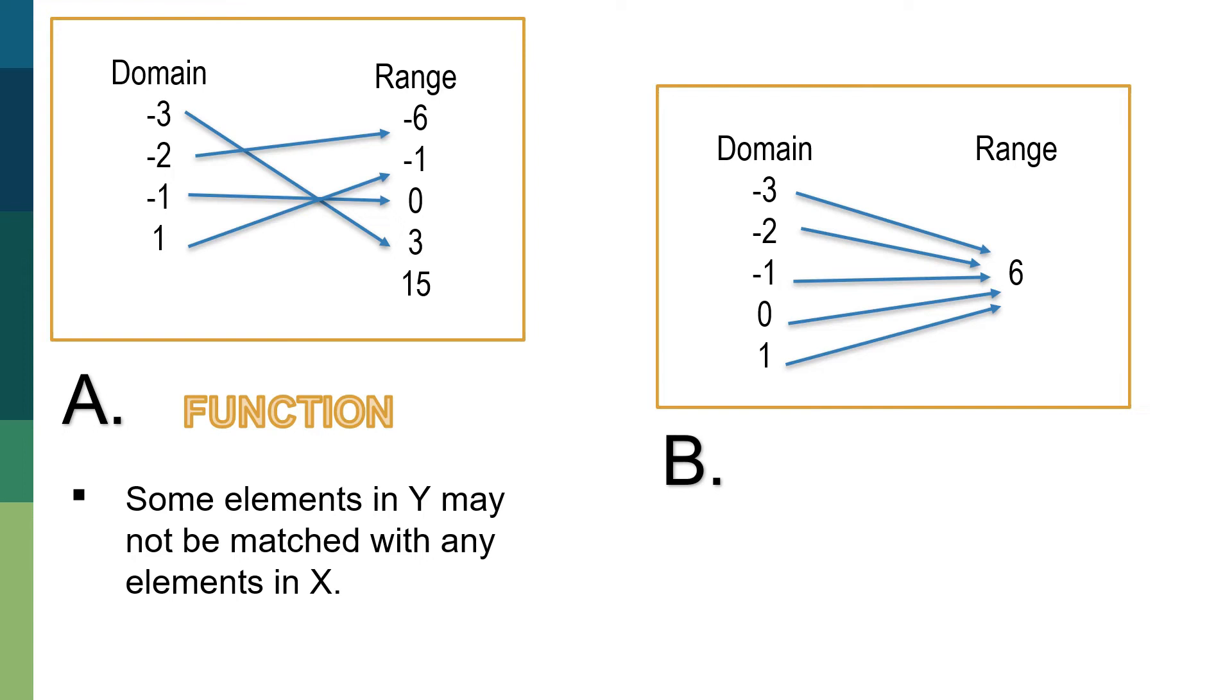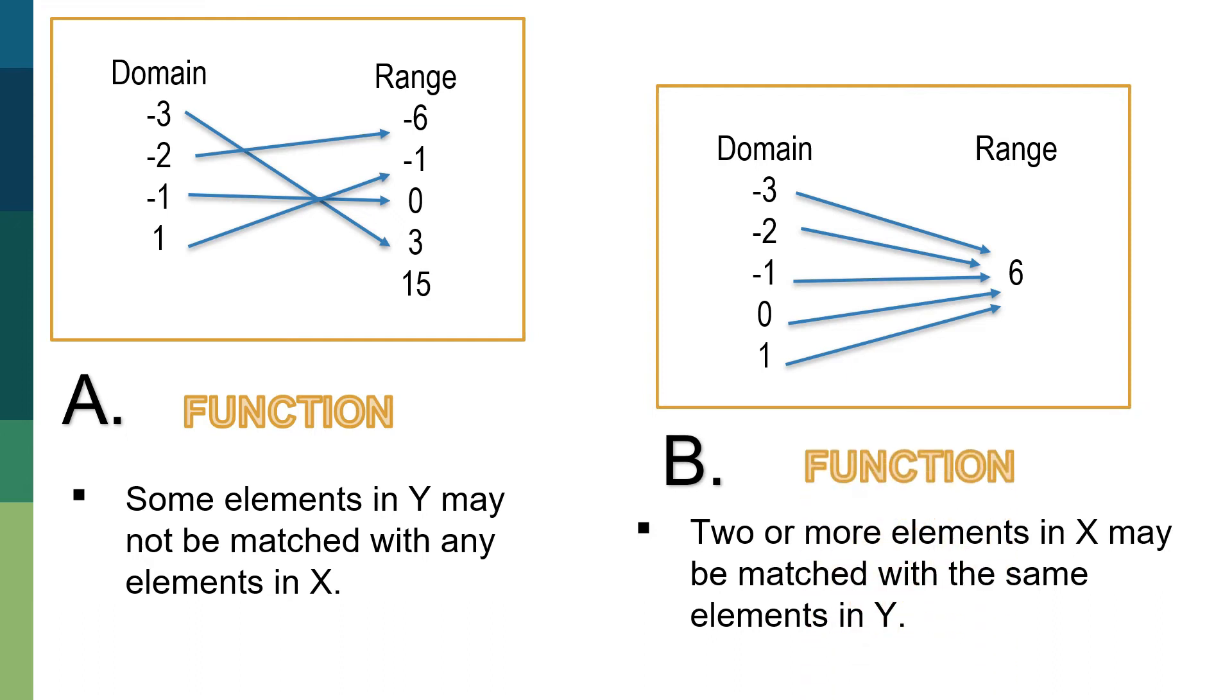On the second one, we have there, as you can observe, all of the elements of the domain is matched to only one element of the range, which is number 6. So it also matches the third characteristic of a function, which is two or more elements in X may be matched with the same elements in Y. So there are 1, 2, 3, 4, 5 elements of the domain, which is matched with only one range.